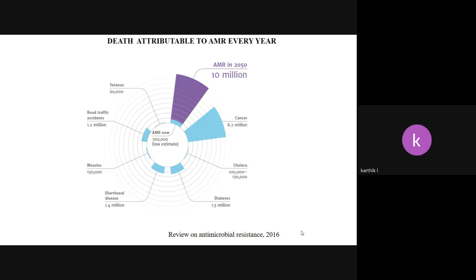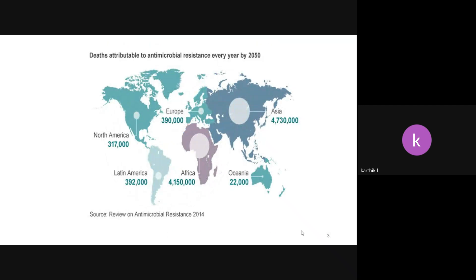But the most important thing is that AMR — antimicrobial resistance — is emerging very fast. WHO predicted that by 2050, around 10 million people will die due to AMR. Worldwide, Asia will have the biggest threat.